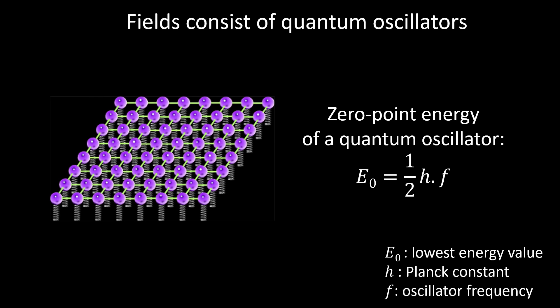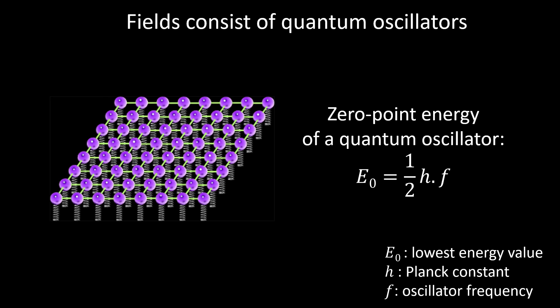And therefore, the amount of energy contained in a quantum oscillator can also not be zero. Even for one specific frequency, a quantum oscillator must contain a minimum energy that is equal to half times the Planck constant times the frequency.